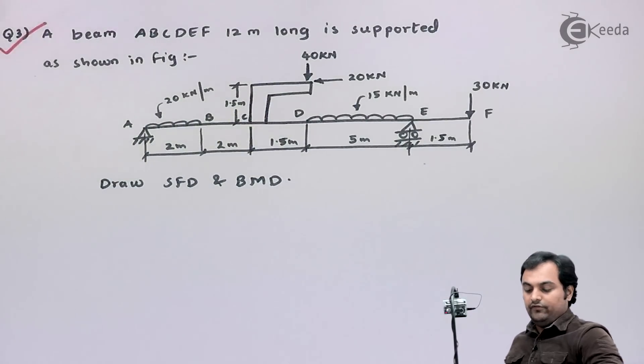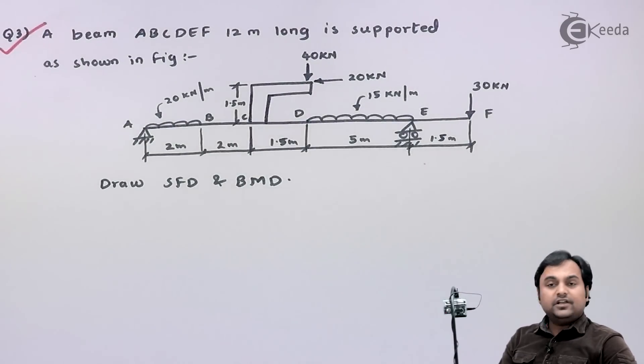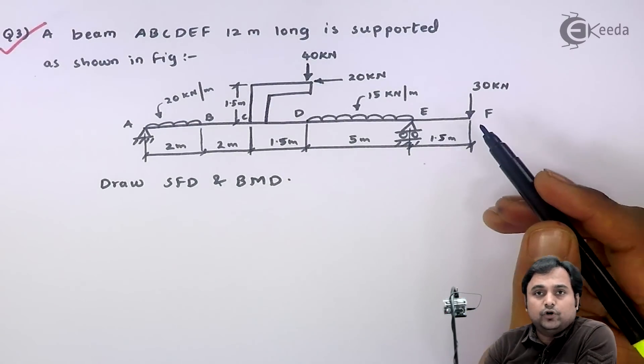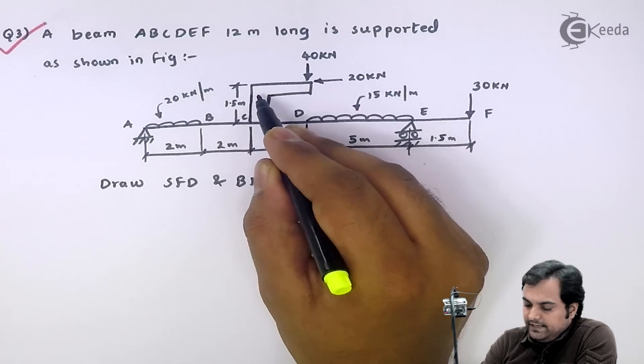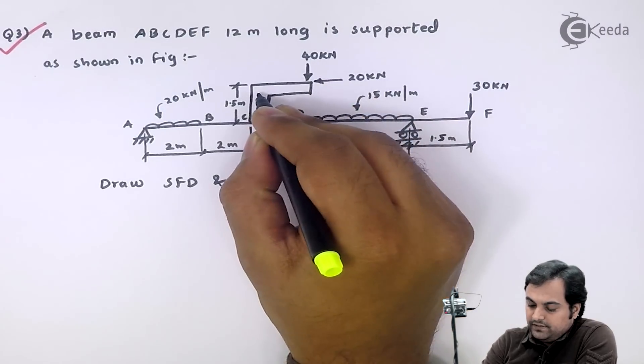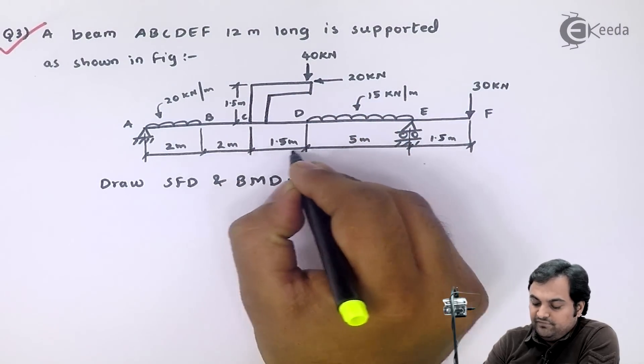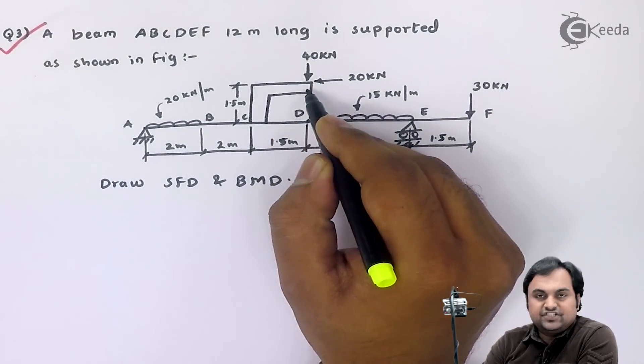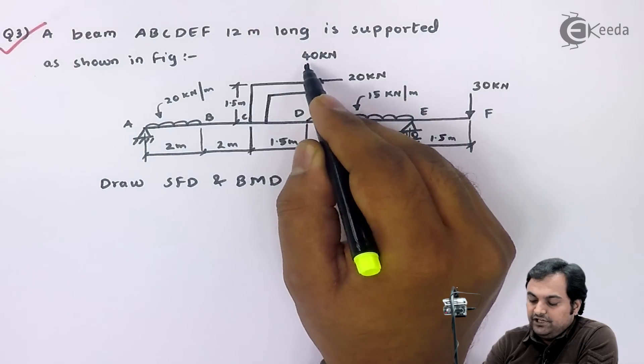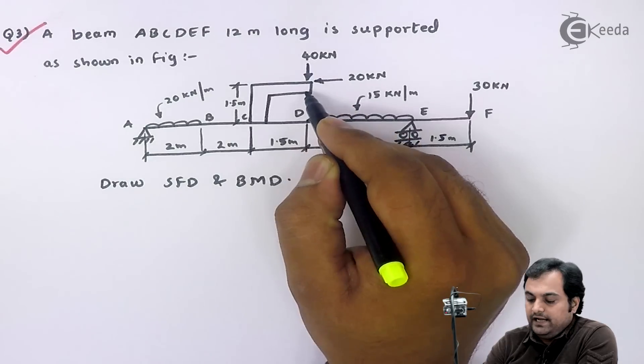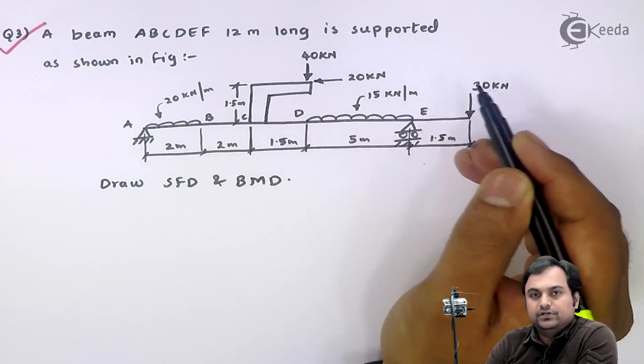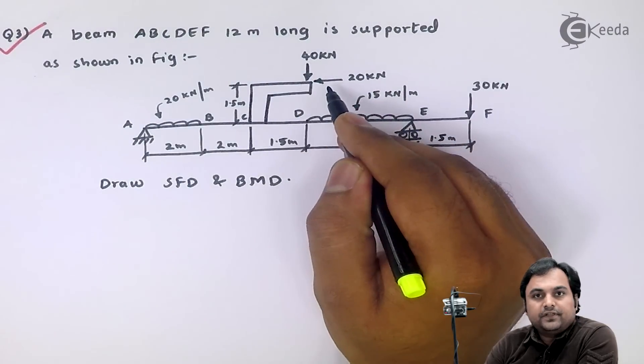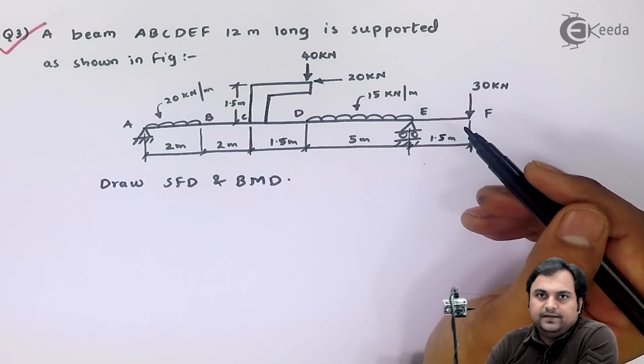Now we'll write the data for this. As we can see, this question is different from previous ones. Here there is an element, a section which is 1.5 meters in width and 1.5 meters in height. Over this section we have a 40 kilonewton load acting downward and a 20 kilonewton load acting horizontally towards the left. We need to convert this into an equivalent diagram.